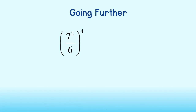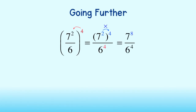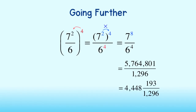Sometimes we will have to use more than one property of exponents to simplify an expression. Take a look at the following monomial. To simplify, let's first apply the power of a quotient property by raising both the numerator and the denominator to the power of 4. Good. Now we can apply the power of a power property in the numerator by multiplying the exponents. 2 times 4 gives us an exponent of 8. Lastly, to simplify completely will mean to find the actual value of the expression. 7 to the 8th power equals 5,764,801 and 6 to the 4th is equal to 1,296. Written as a mixed number, this is 4,448 and 193/1,296.